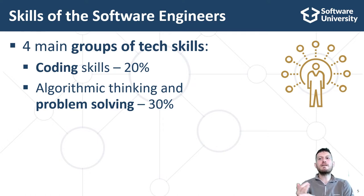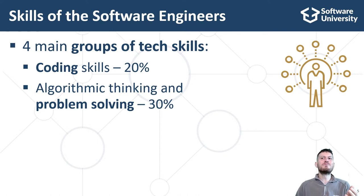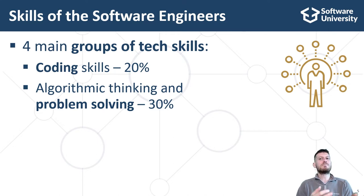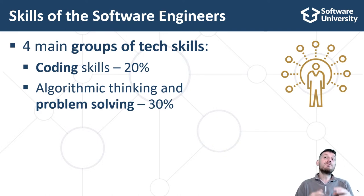Problem solving is the act of defining a problem, determining the cause of the problem, analyzing it, identifying, prioritizing and selecting alternatives for a solution, and implementing a solution successfully. In computer science, we deal with technical problem solving — the most important skill of any programmer — the ability to solve technical problems by breaking them into sequences of steps and implementing those steps with code. To master this skill, it's necessary to invest 6 to 12 months of intensive training and to solve at least 1,000 practical programming problems.